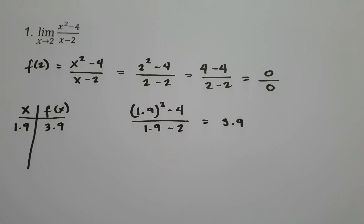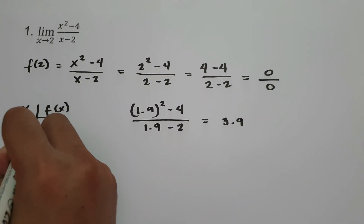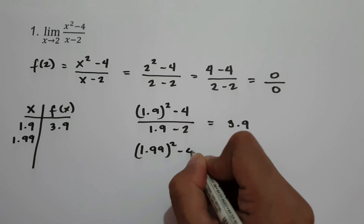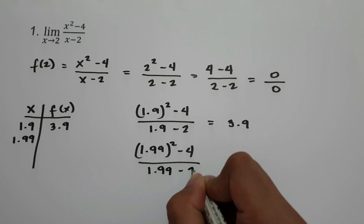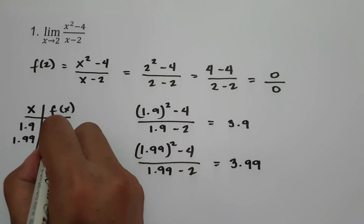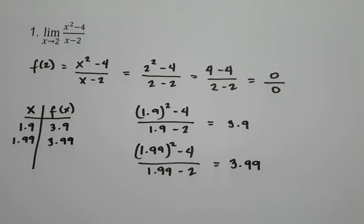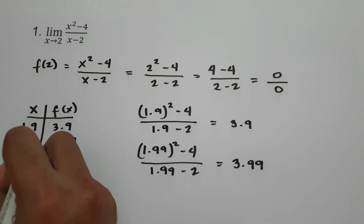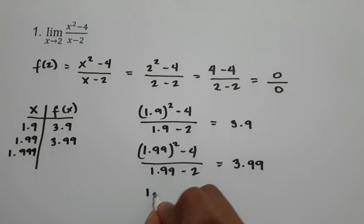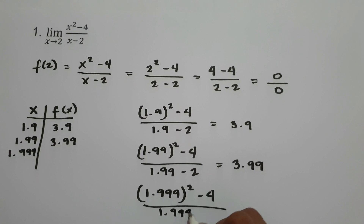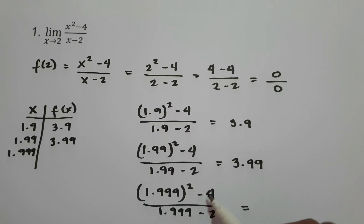Let's try another value of x closer to 2 — say 1.99. Computing 1.99 squared minus 4 all over 1.99 minus 2 gives 3.99. Then trying x = 1.999: we have 1.999 squared minus 4 all over 1.999 minus 2, and plugging this into the calculator gives 3.999.